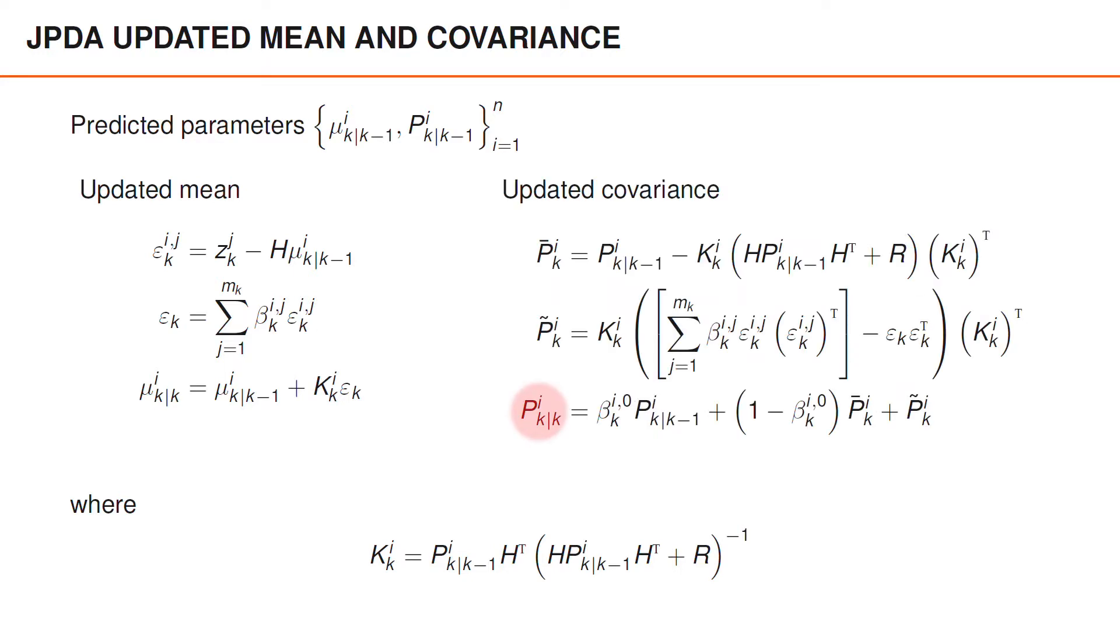The updated merged covariance is the sum of three parts. So first we have beta i0 times the prior covariance, so the probability of no association, and the covariance that we have if there is no measurement that we can update with. Second is 1 minus beta i0 times p bar. This is the probability of associating to any of the detections, and the covariance that results from updating with a measurement.